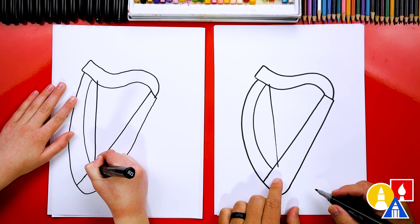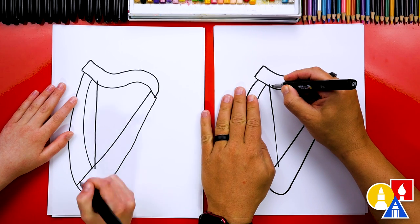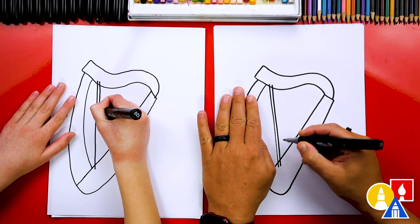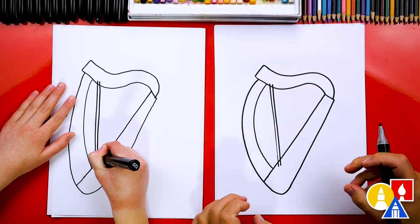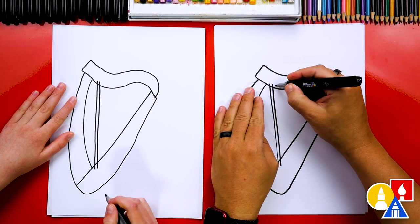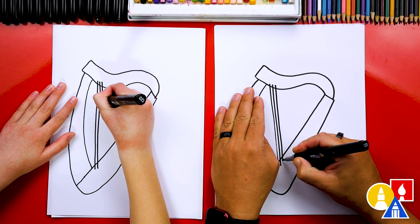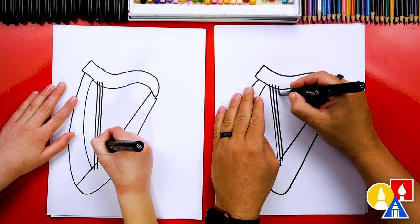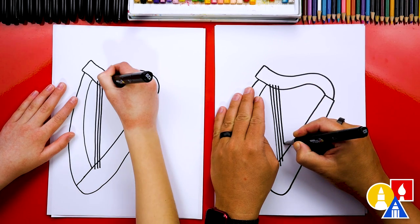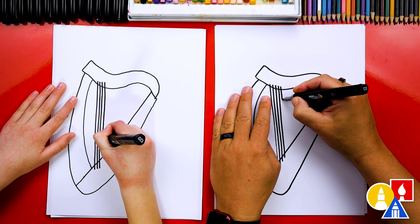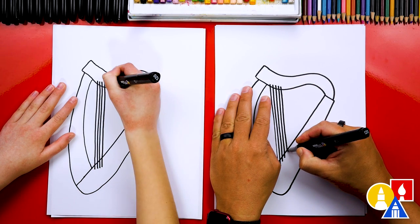And then we're going to repeat that step. I'm going to try to draw it really close, but parallel, so it doesn't get closer or further away. And if you wanted to, you could use a ruler for this step. We're just going to try to draw the lines as straight as possible without a ruler. I think that's fun to practice. And then we're going to keep drawing the lines all the way across our harp.